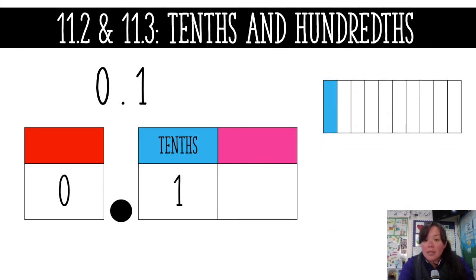The model would look like this: one out of ten is shaded, and my fraction would be one out of ten.